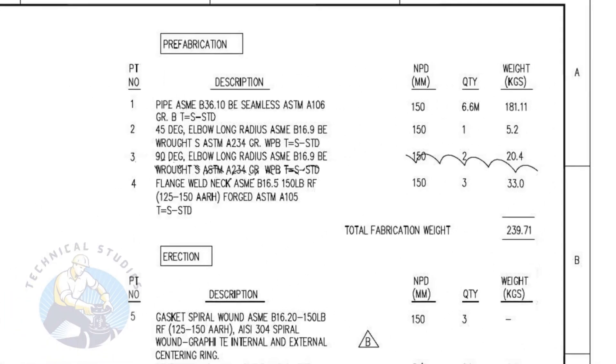Let us have a look at the material list. Item number one is bevel end seamless pipe, standard schedule. The nominal pipe diameter is 150. The quantity required is 6.6 meters.